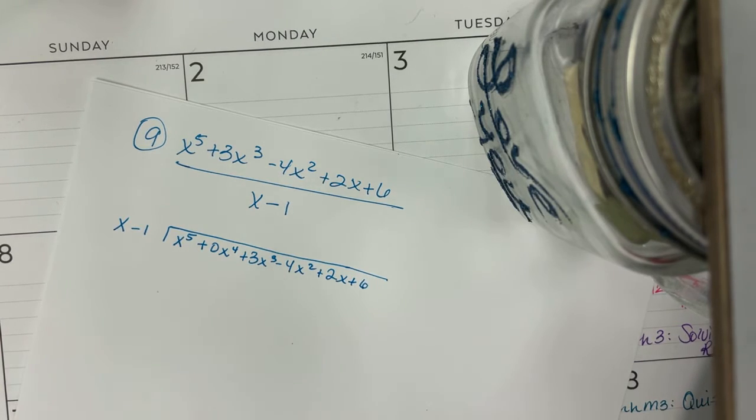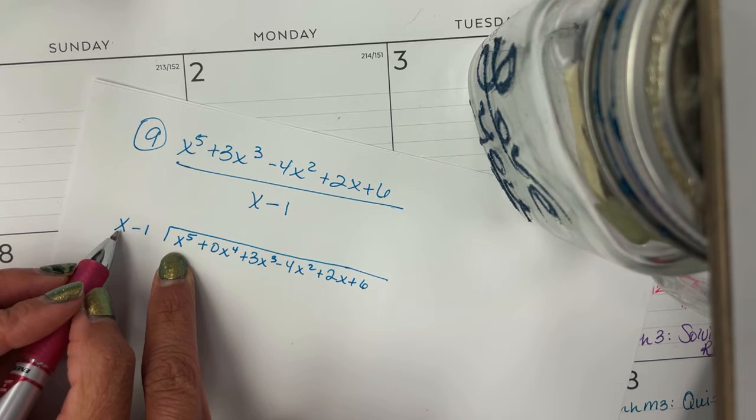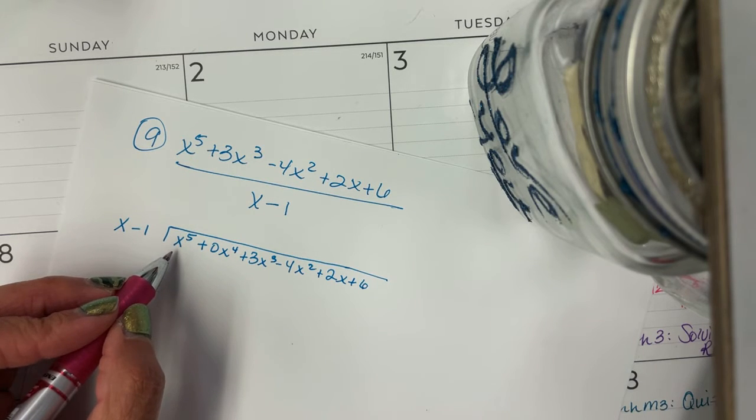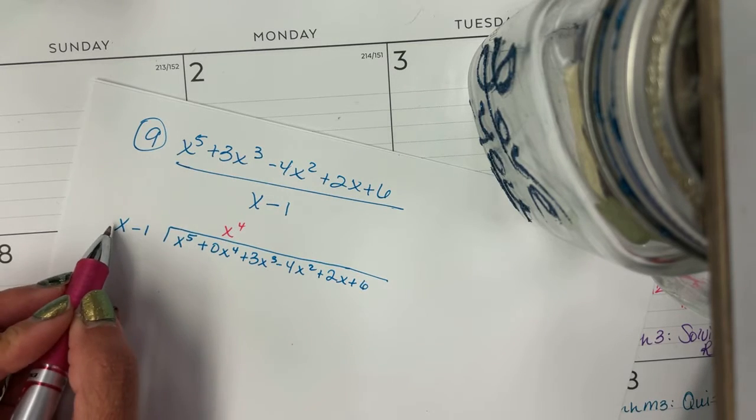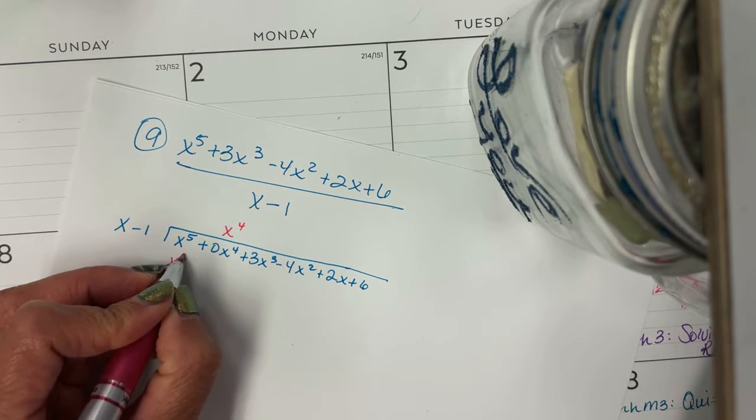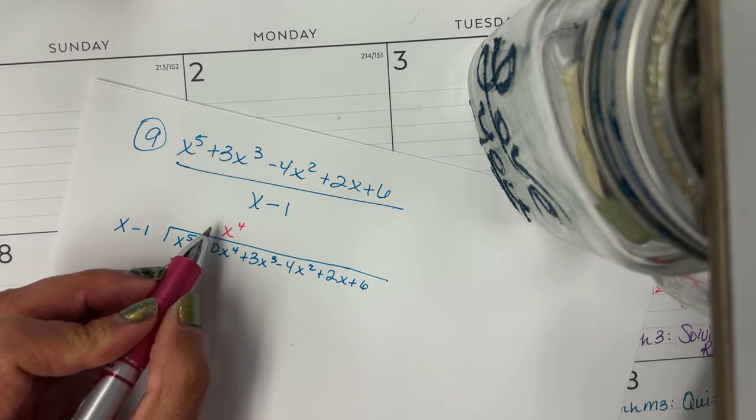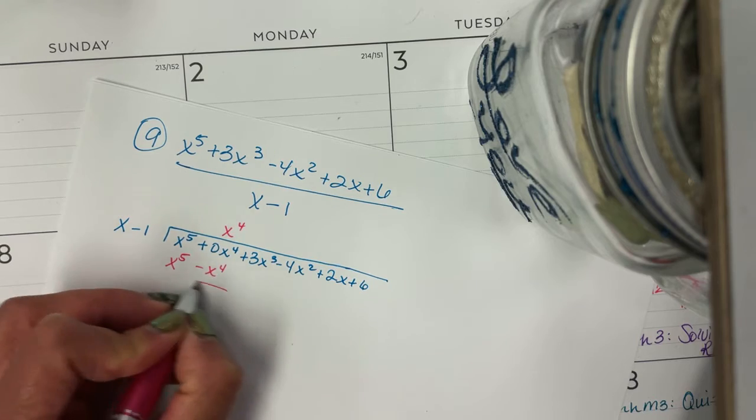Now I'm going to start the polynomial long division. You always start with the first term. So you look at the divisor, it's just an x. What do you need to multiply by x to get x to the fifth? Well, I need x to the fourth, because x to the fourth times x will give me x to the fifth, and that's what I want. But then I have to distribute it times the minus one as well. x to the fourth times negative one is negative x to the fourth.